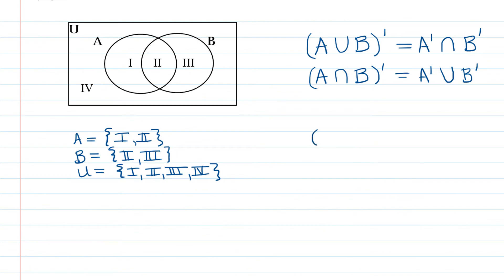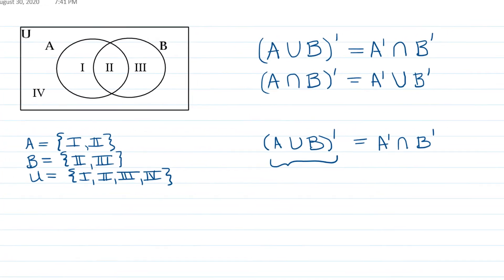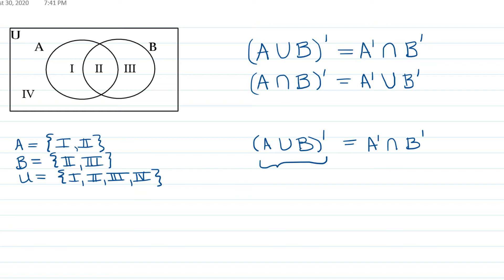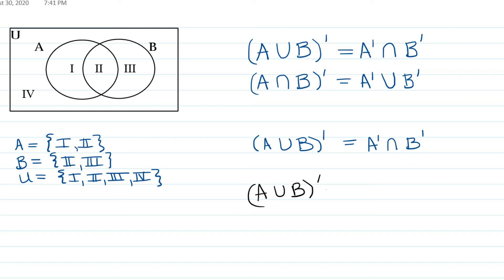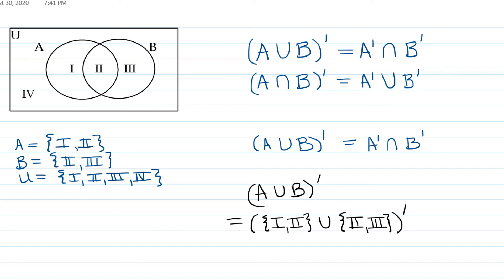Let's start with the proposition that the complement of A union B equals the intersection of the complements of A and B. To establish that, we need to figure out what each side looks like in the Venn diagram. Starting with the complement of (A union B), I'll replace A with regions I and II, and B with regions II and III, copying down the parentheses, the union, and the complement.